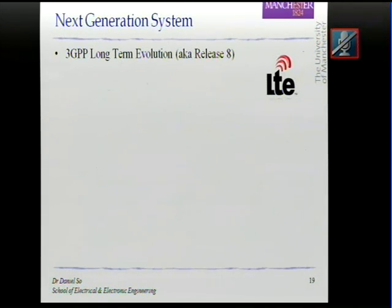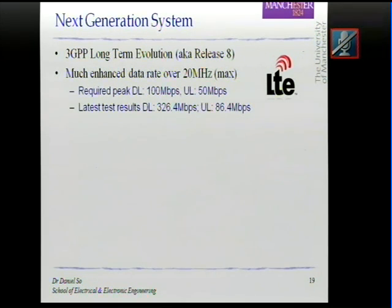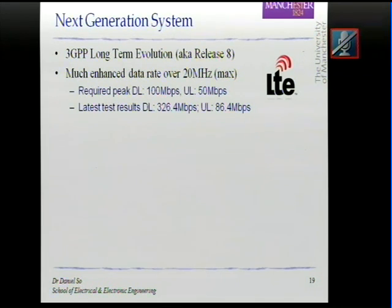Another development is the next generation system: 3GPP LTE, the Long-Term Evolution, also called Release 8. It has a much higher data rate using a larger bandwidth of 20 MHz, and the required downlink data rate is 100 Mbps. By comparison, HSDPA — the mobile broadband used worldwide today — provides a data rate of 7.2 Mbps. So going from 7.2 to 100 Mbps, the data rate is much, much higher.